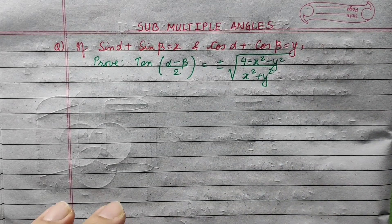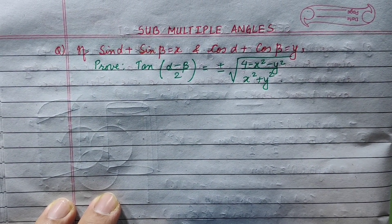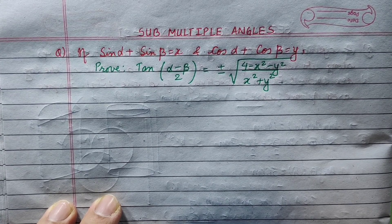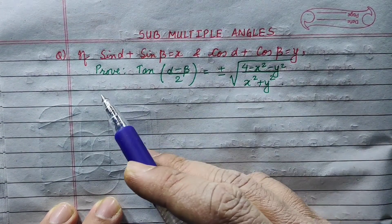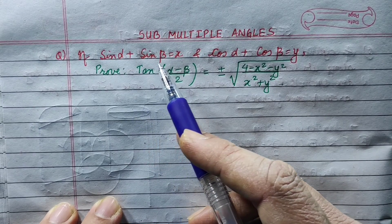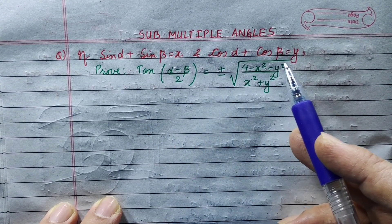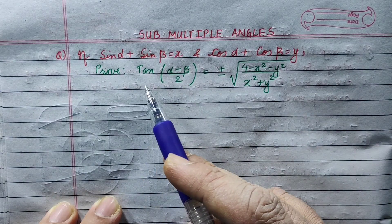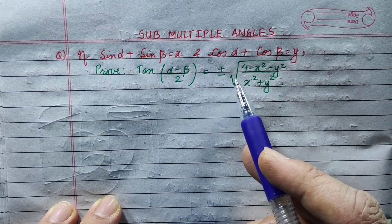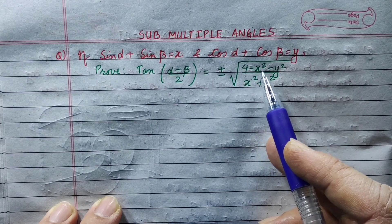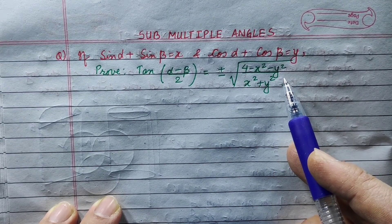Hi everyone. Today I am going to take all multiple angles — I am going to prove a long question. If sin alpha plus sin beta equals to x and cos alpha plus cos beta equals to y, prove that tan((alpha minus beta) by 2) is equal to plus minus under root of (4 minus x square minus y square) whole upon (x square plus y square).